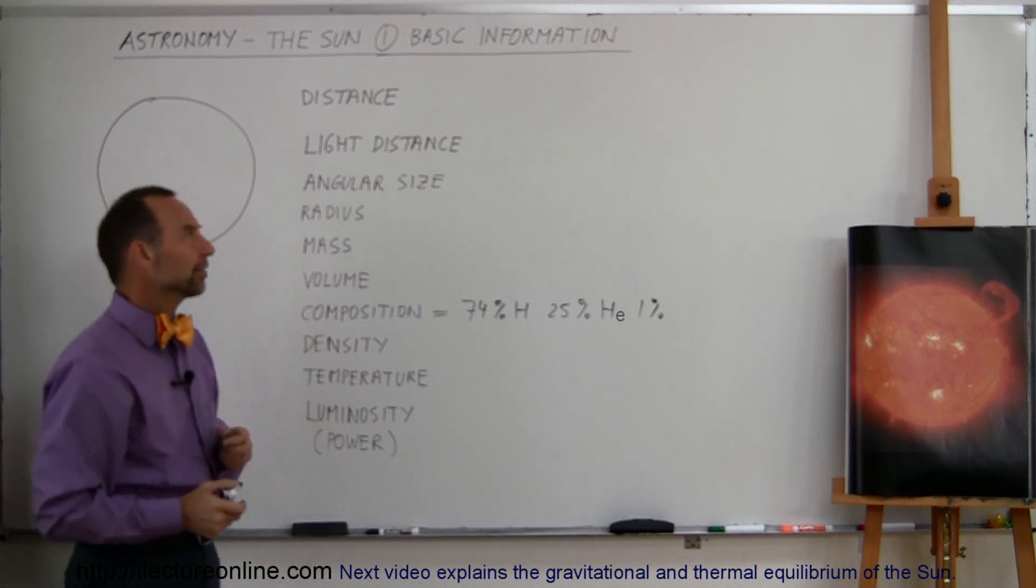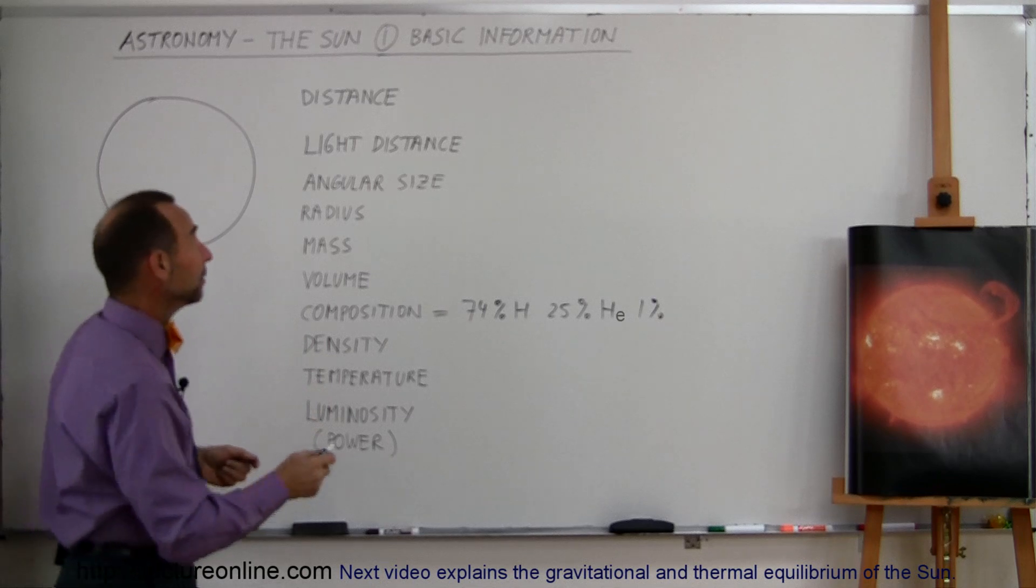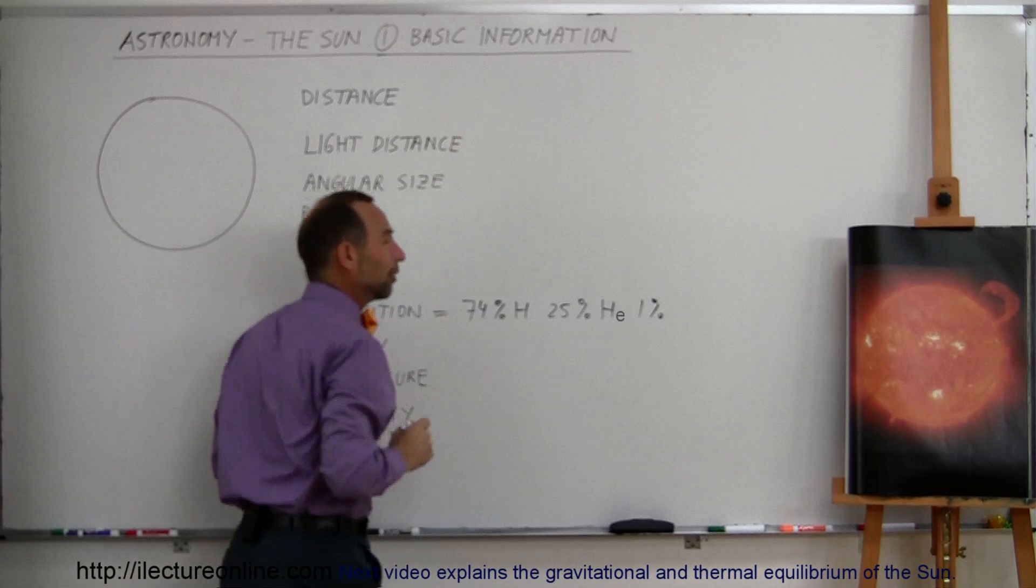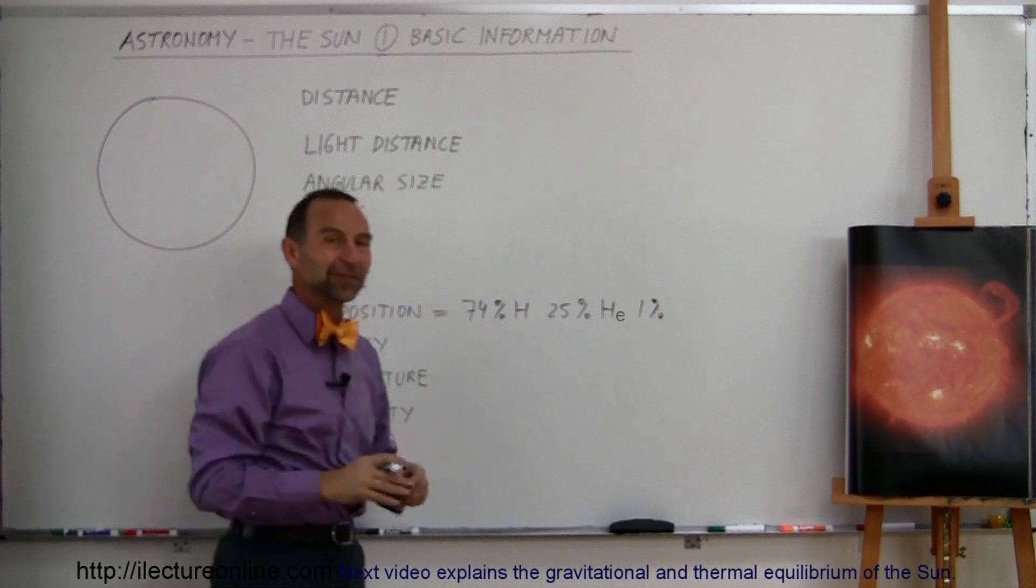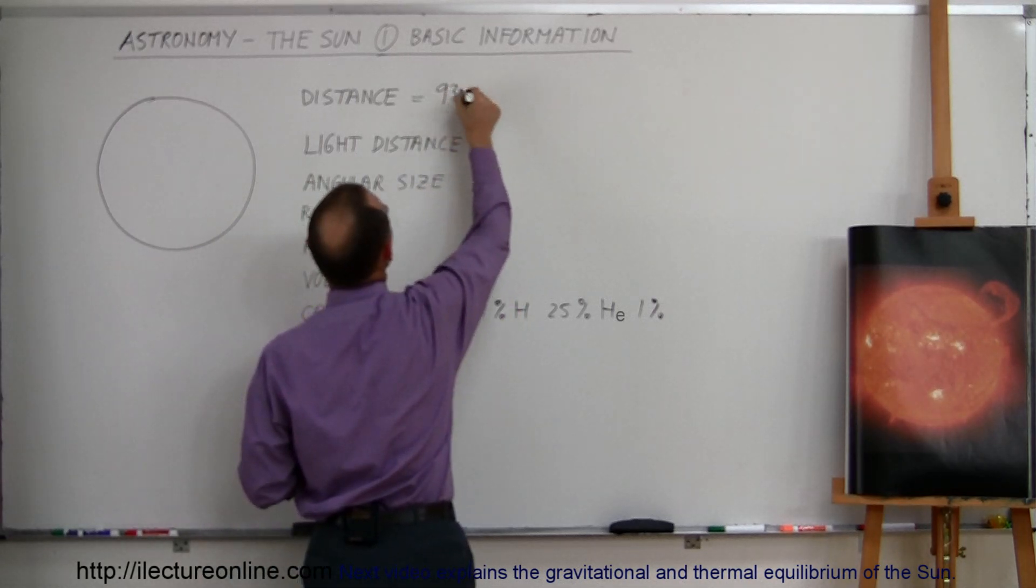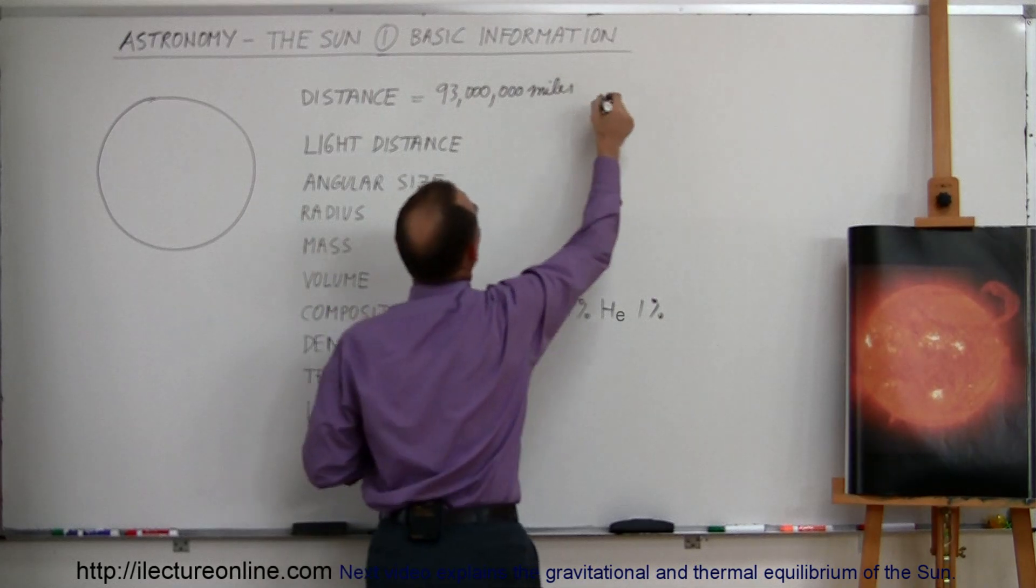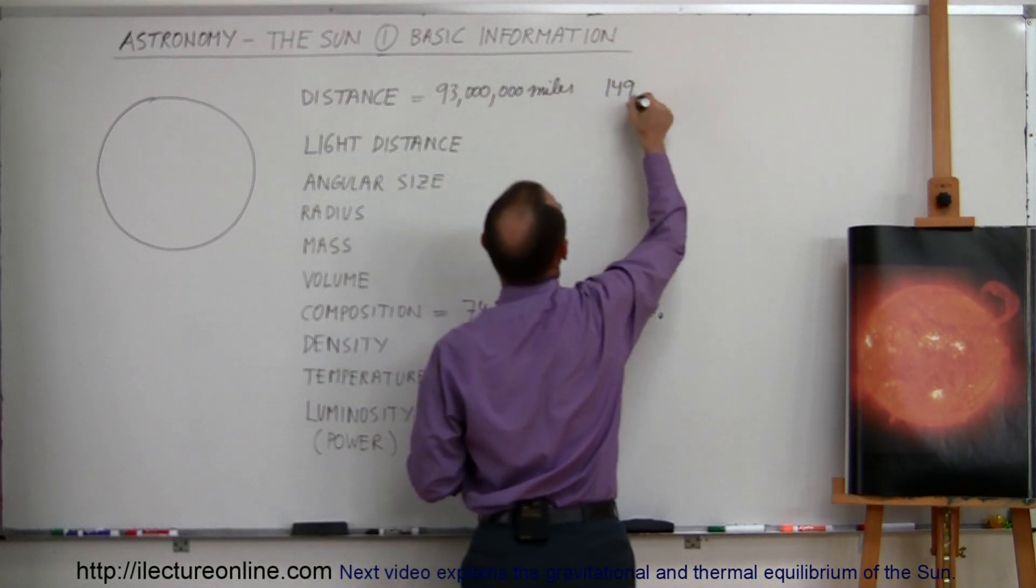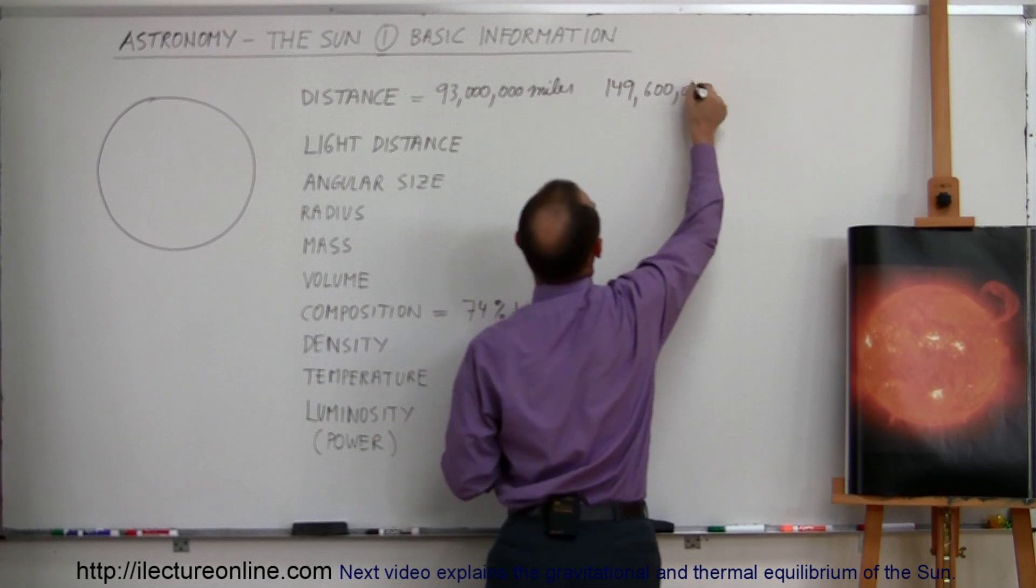But how big is this? How big is this thing, and how far away is it? Well, most of us in the astronomy world know that the distance is about 93 million miles, which is about 149,600,000 kilometers.